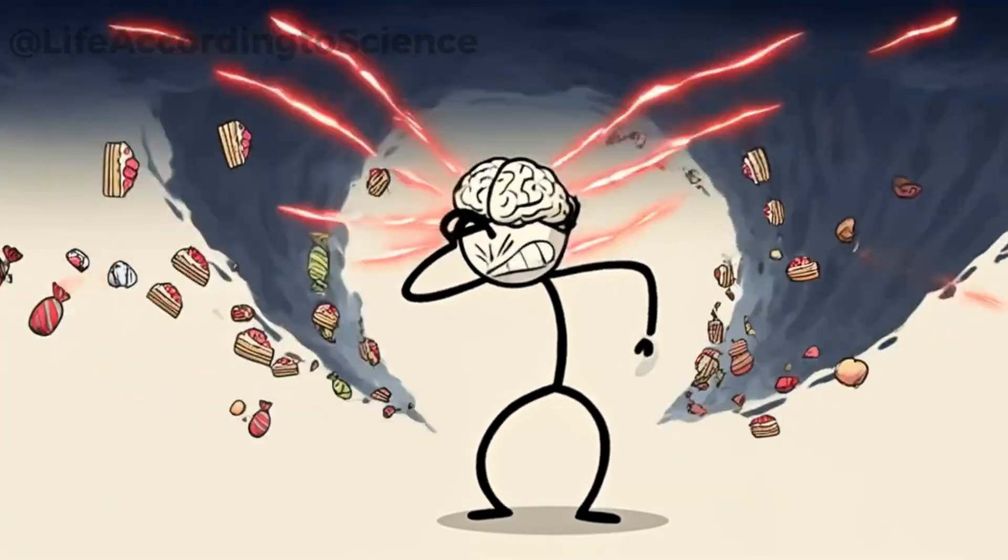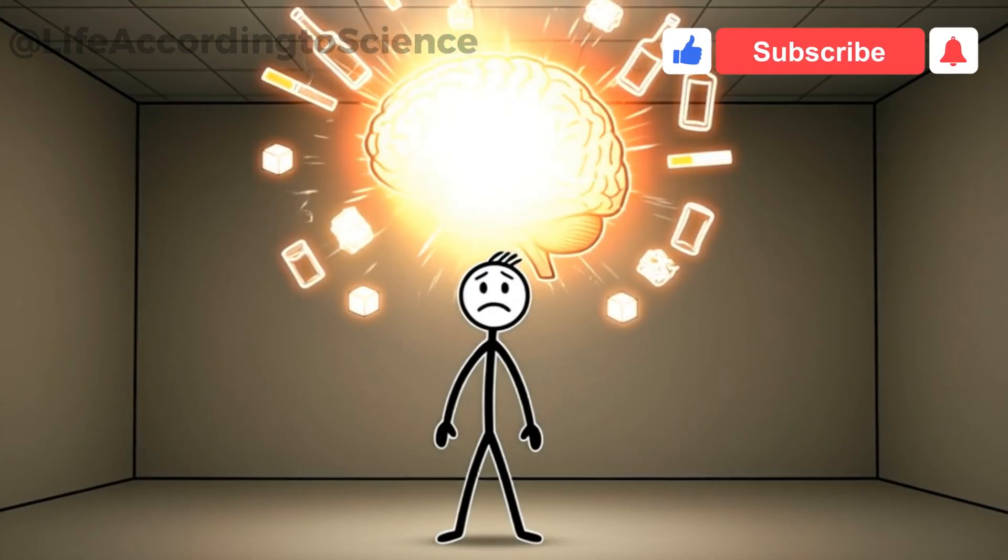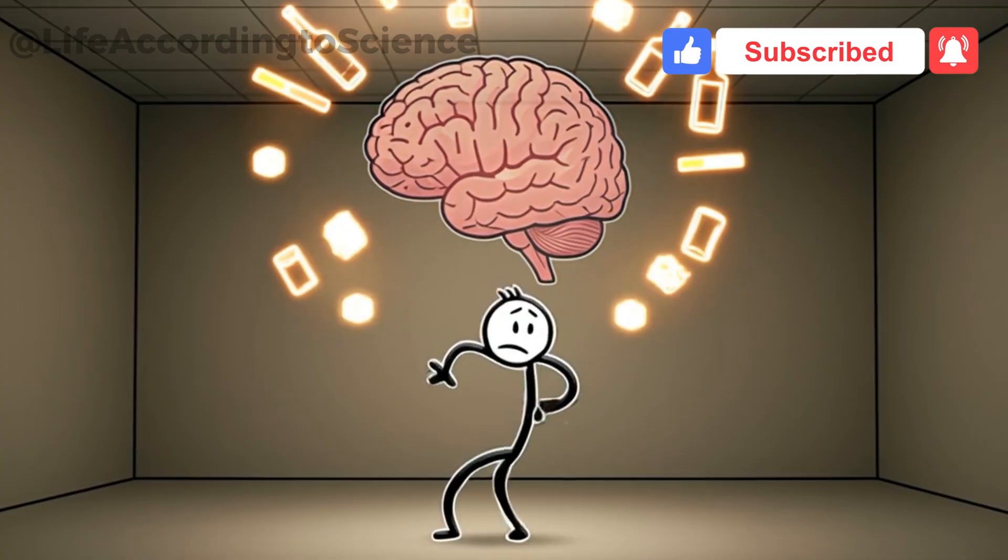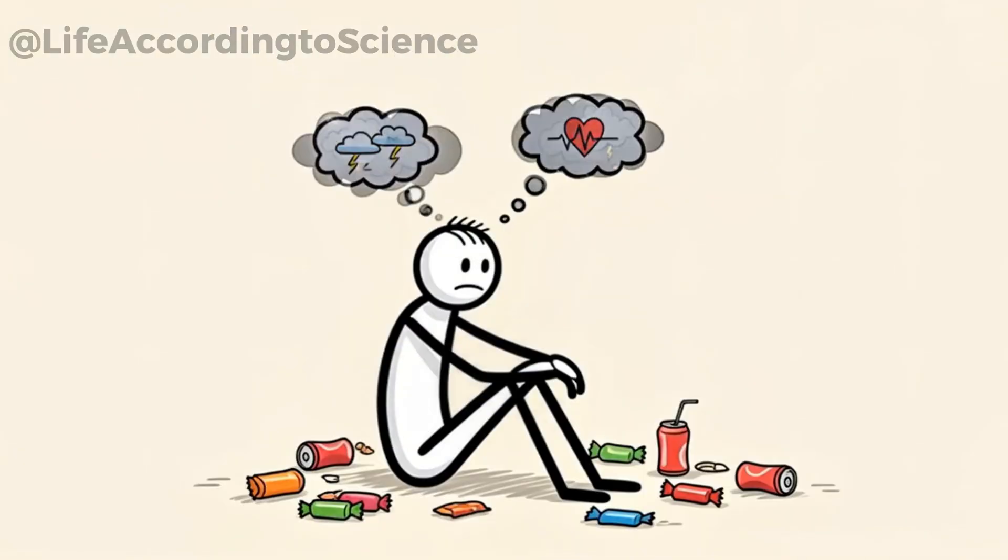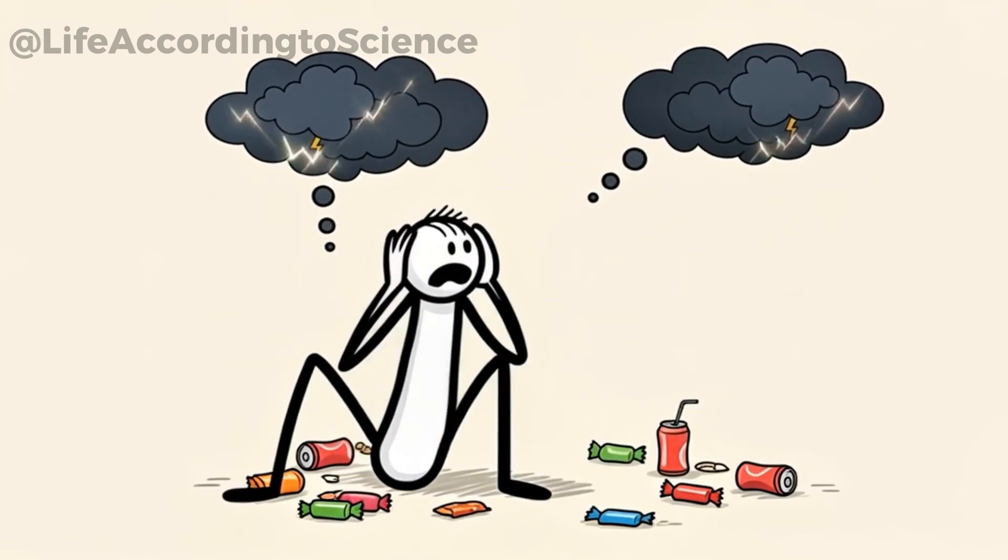Sugar doesn't just affect your body, it hijacks your brain. Studies show that sugar activates the reward centers as addictive substances. So when you cut it out, your brain reacts with loud protest. You may feel moody, restless, or even anxious. This is where the psychological game begins.